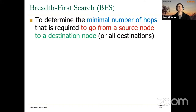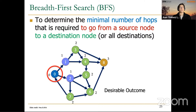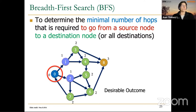The goal of BFS is to determine the minimal number of hops required to go from a source node to a destination node, or to all destination nodes. The desirable outcome of BFS for our particular graph with source node zero is a labeling where each vertex has a number representing the distance from the source. For example, the distance from node 0 to itself is 0, to nodes 1 and 2 is 1, to nodes 3, 4, 5, and 6 is 2, and to node 8 is 3.